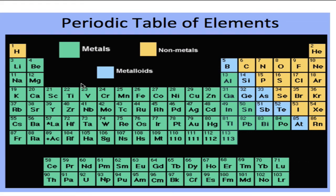Today we're going to be discussing the periodic table of elements. Just looking at it, it can be super overwhelming — there are all these symbols and numbers. This version is actually missing a couple of elements; the periodic table goes to element number 118. But the best thing about the periodic table is that it holds all the information we need. It tells you the number of protons, neutrons, electrons, and even how many energy levels a particular element has.